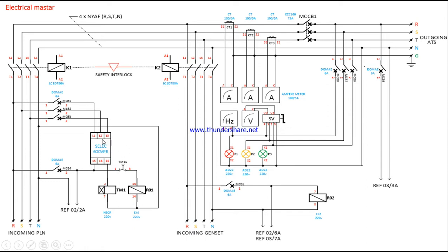The phase failure relay requires three-phase supply R-Y-B. Whenever the R-Y-B supply is available, the phase failure relay connects the common to the NO contact — terminals 15 to 18. Terminal 15 is the common supply of the phase failure relay and terminal 18 is the NO. Whenever supply is available, terminals 15 and 18 are closed. A control MCB from single-phase supply is used; when turned on, it connects to the common supply of the phase failure relay.